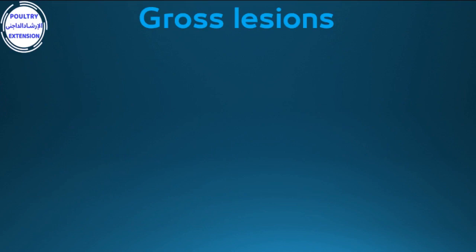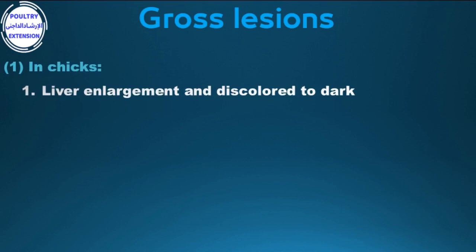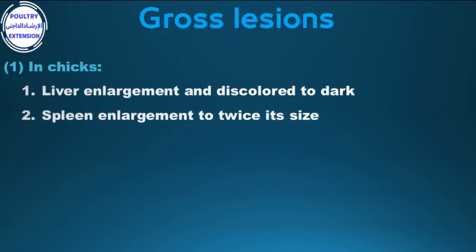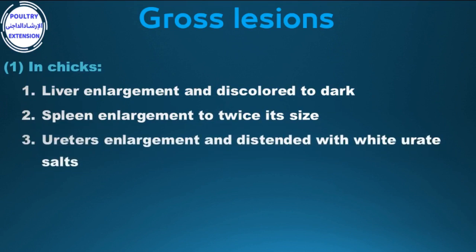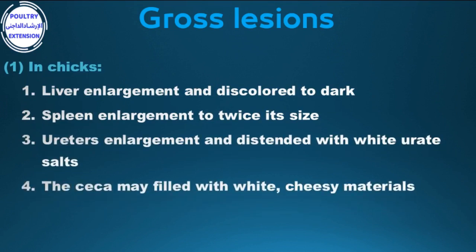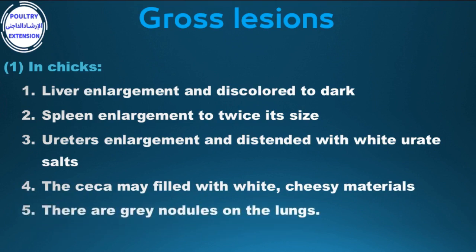Gross lesions in young chicks: 1. Liver enlargement, color turning dark. 2. Spleen enlargement to twice its size. 3. Ureter enlargement and distension with white urate salts. 4. The cecum may be filled with white cheesy material. 5. Gray nodules on the lungs. 6. Intestinal inflammation.